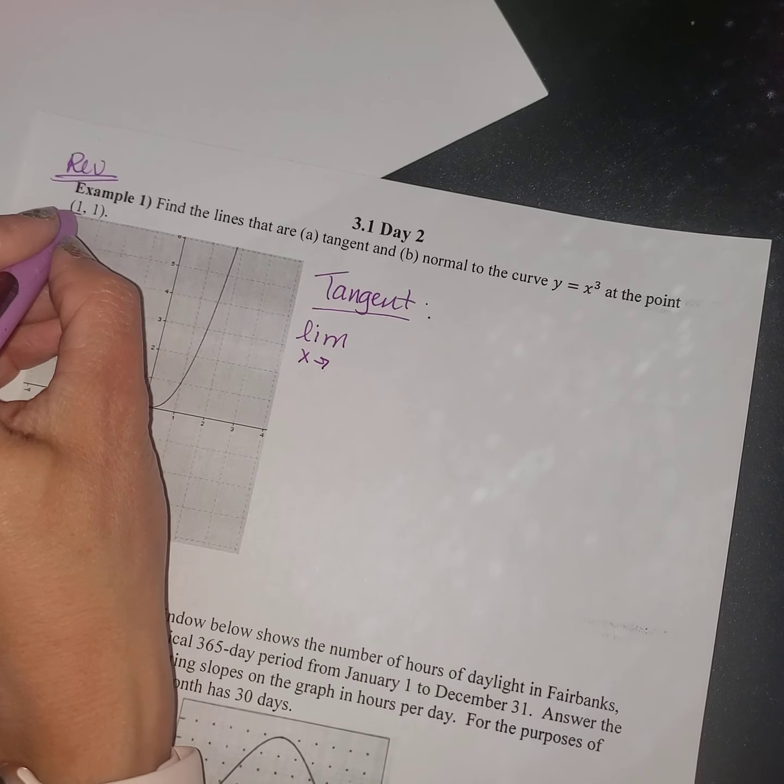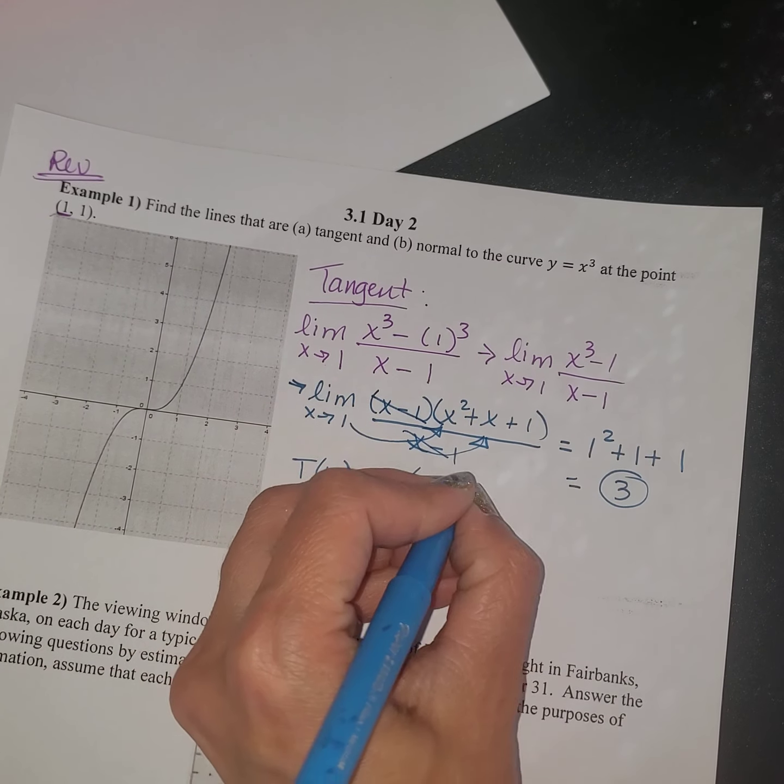So this gives me the limit as x approaches 1 of x cubed minus 1 over x minus 1. Well, that x cubed minus 1 is a difference of cubes, and there's a special way to factor that. And if you don't remember, all you have to do is type in to Google difference of cubes, and then you see the little formula that you can use to factor it.